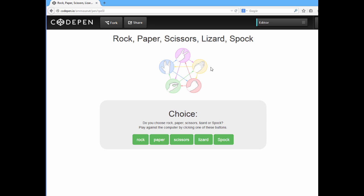So, it works really easily. You see all the different symbols that you would have to use with your hand. And you are asked if you choose rock, paper, scissors, lizard or Spock.